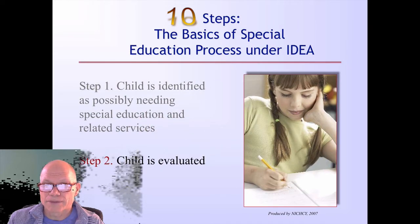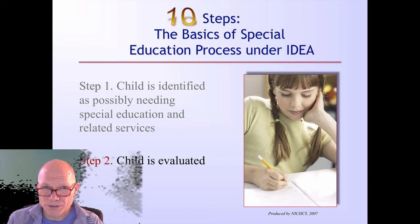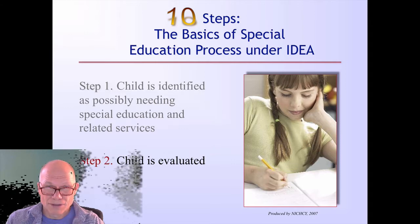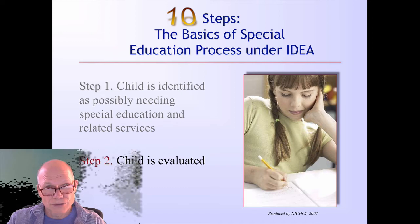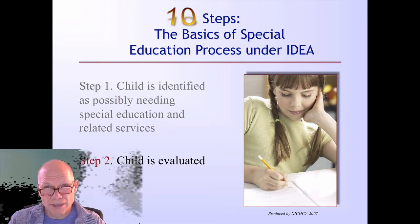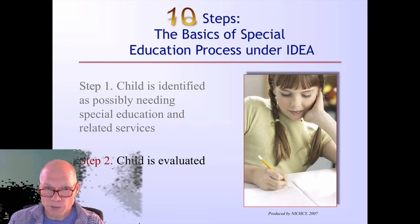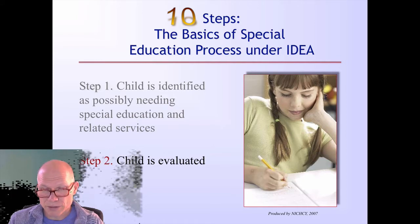The second thing that happens, and there are actually lots of steps in between, is the child is evaluated for services. A step in between here is that there is a requirement that other services are tried first, or that the school have a team to make sure that the general education process has been implemented appropriately first. But then the child is evaluated for special education services.